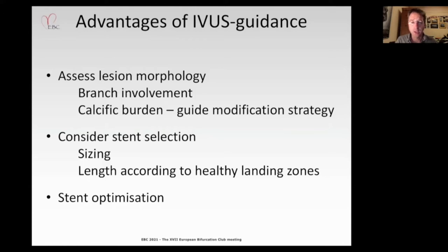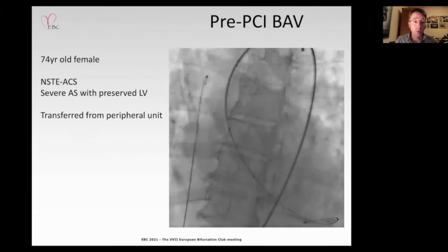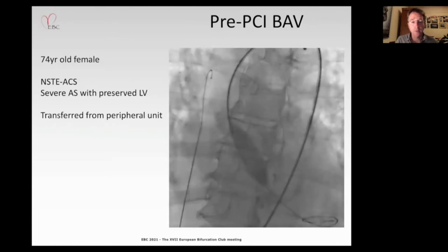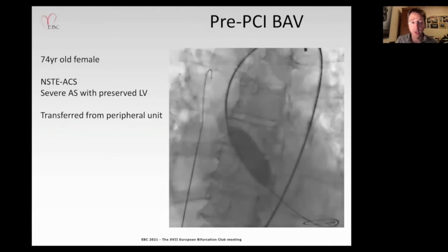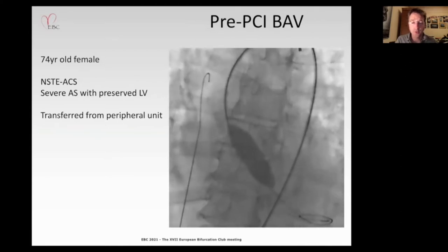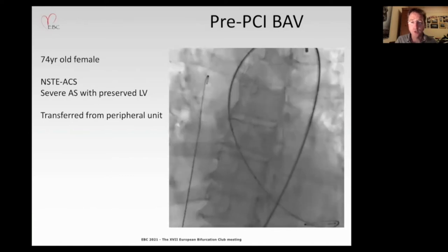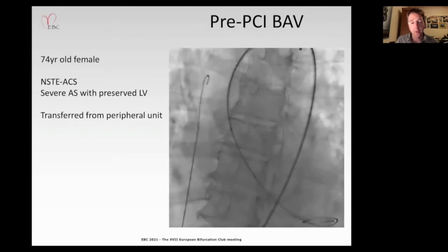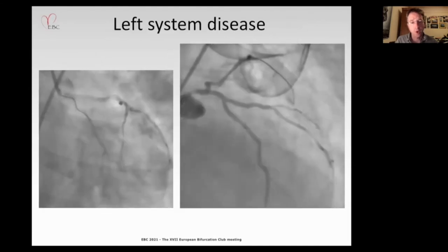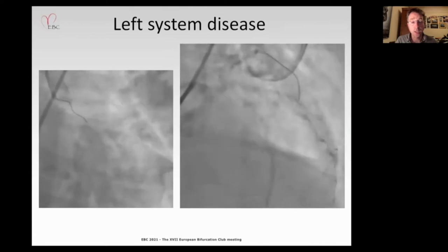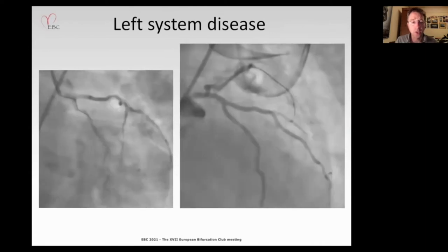I'd like to share a case to highlight these elements. This is a complex case: a woman in her 70s presenting to a peripheral hospital with non-ST-elevation myocardial infarction, found to have severe aortic stenosis with preserved ventricular function but critical ostial left main stem disease. She was transferred to us and underwent BAV prior to treatment of her ostial left main, in anticipation of TAVI.